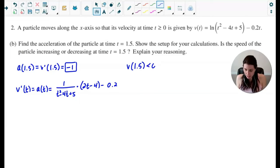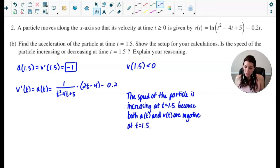So again, what's important is whether it's positive or negative. So as we can see, acceleration and velocity are both negative at a time of 1.5. And because they have the same sign, that means the speed of the particle will be increasing. So I would write the speed of the particle is increasing at t equals 1.5 because a(t) and v(t) are both negative at t equals 1.5.